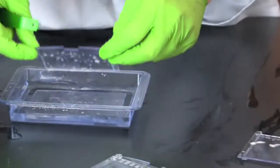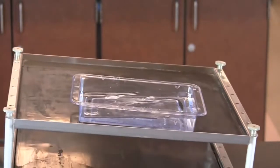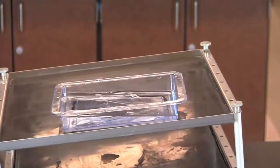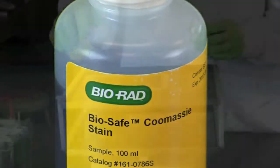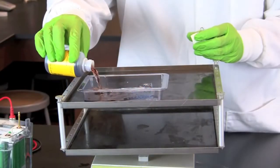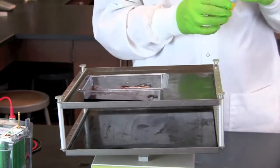If time permits, rinse the gels three times for five minutes. This will remove chemicals and provide for better staining. After pouring out the tap water, add 50 milliliters of bio-safe Coomassie stain. For best results, stain the gel for at least one hour.